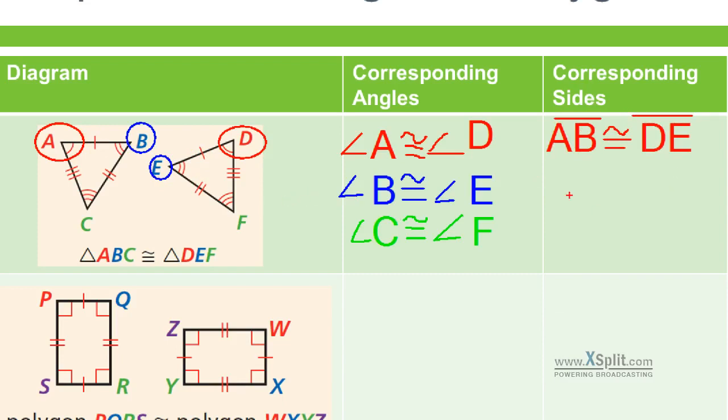And we could say this as well for each of the other combinations. Like we have a two notch and a two notch between BC and EF. So I could say BC and EF are going to be congruent to one another. And then we have three notches, AC and DF. AC and DF are also going to be congruent to one another.